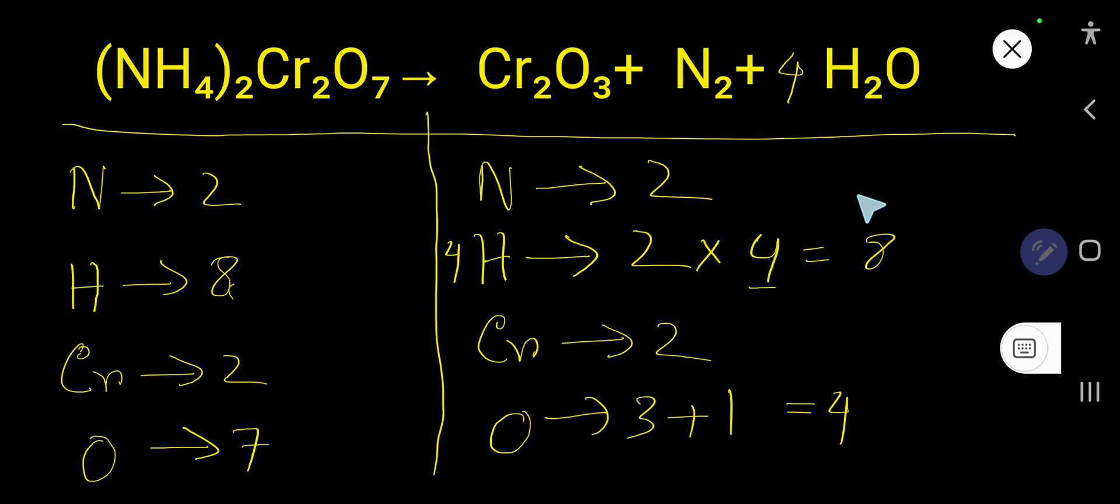So let us update: you have 7 oxygen, 7 oxygen; nitrogen 2, 2; hydrogen 8, 8. Everything is balanced.